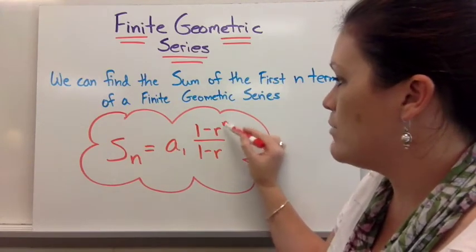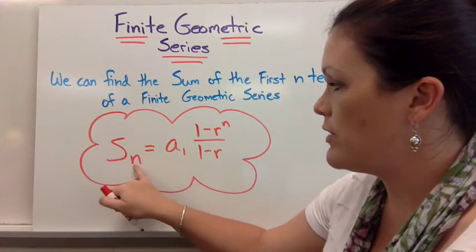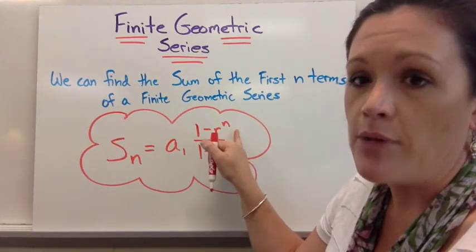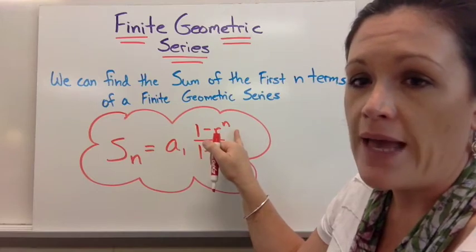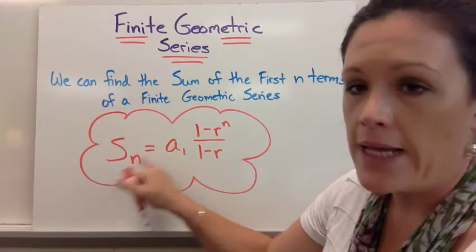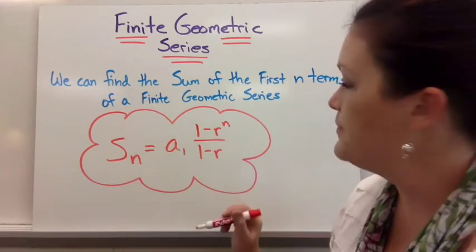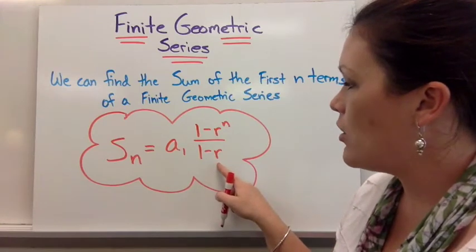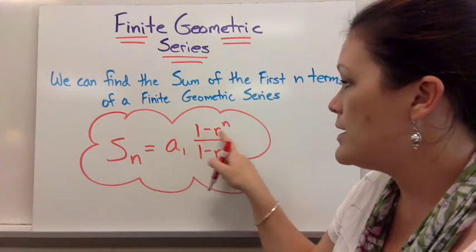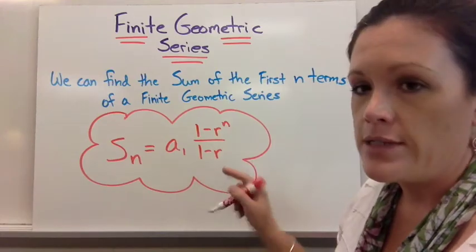And then n is the number of terms you're talking about. So this little n right here and this little n right here mean the same number. So if they ask you to find the sum of 8 terms, that could be an 8, and you fill that one in as an 8. And then 1 minus r, which is your ratio at the bottom. So first term, 1 minus r to the n power over 1 minus r.